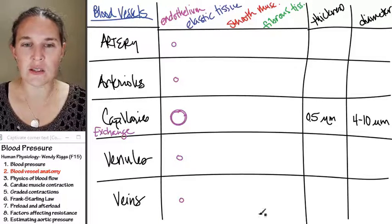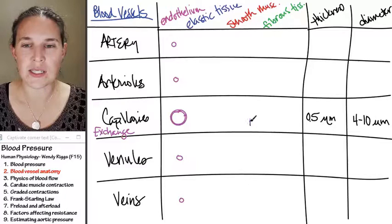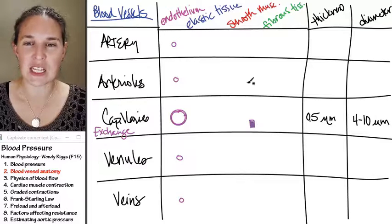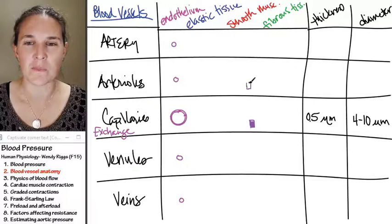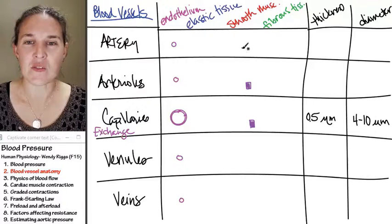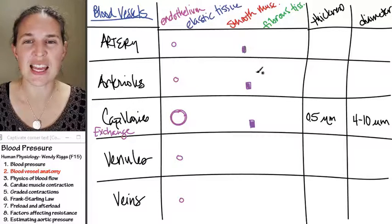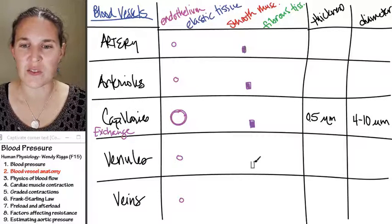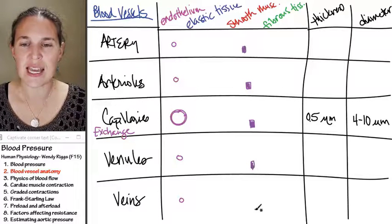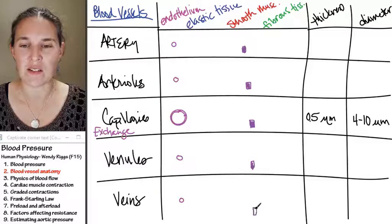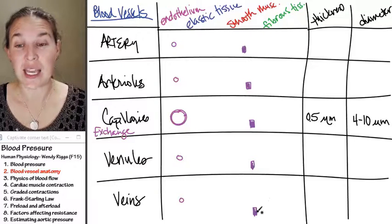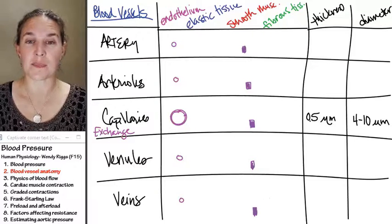I'm going to do a little graph that you will see like amounts of each of the tissue types in each vessel so we can compare. The amount of endothelium in each vessel, just like the thickness of the endothelium in the vessel, is the same in every single kind of vessel. That's not going to be the case with our other tissues.